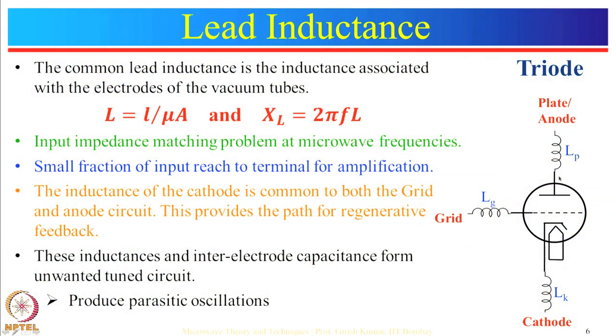The next limitation is lead inductance. An inductance exists for a conducting wire. For a triode with three electrodes, there must exist inductance for each electrode wire — L_grid, L_plate, and L_cathode. The inductance of a conducting wire is given by L = l/(μA), where l is the length of the wire, μ is the permeability of the material, and A is the cross-sectional area.